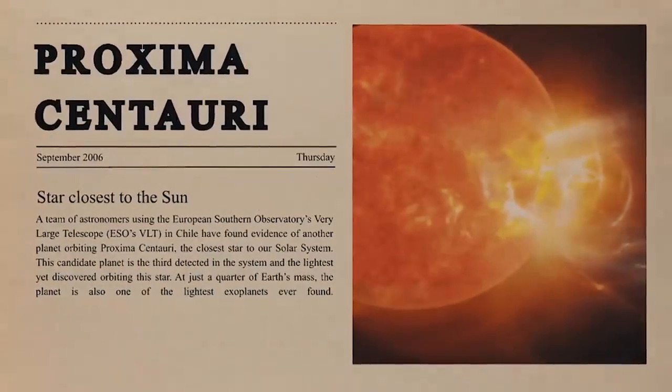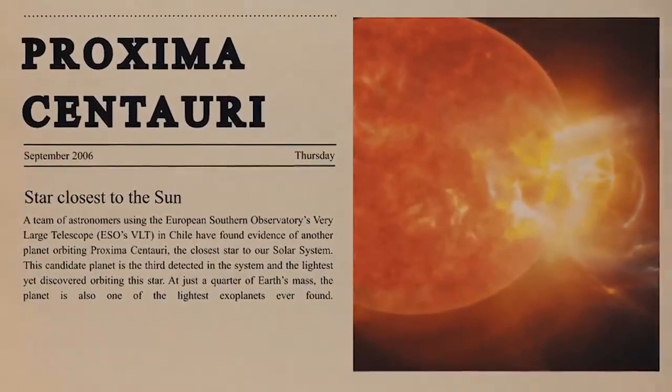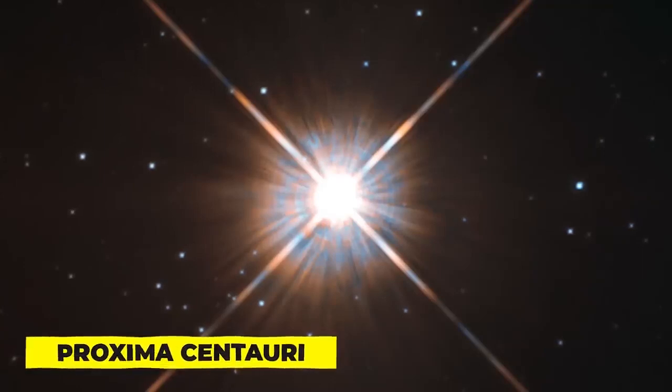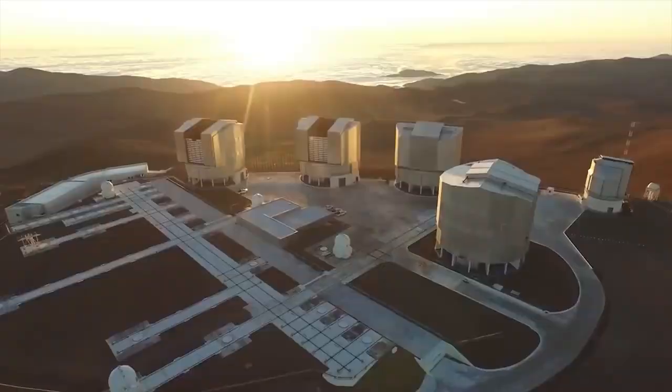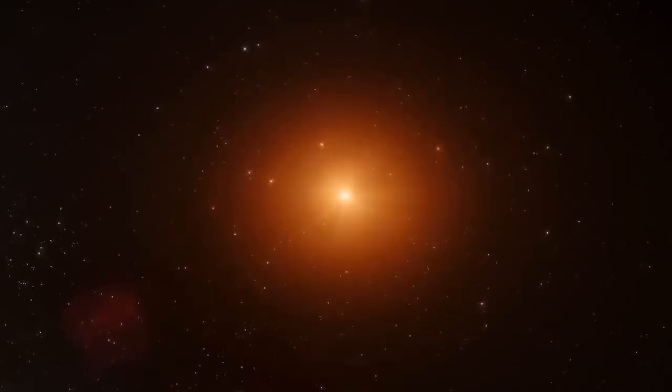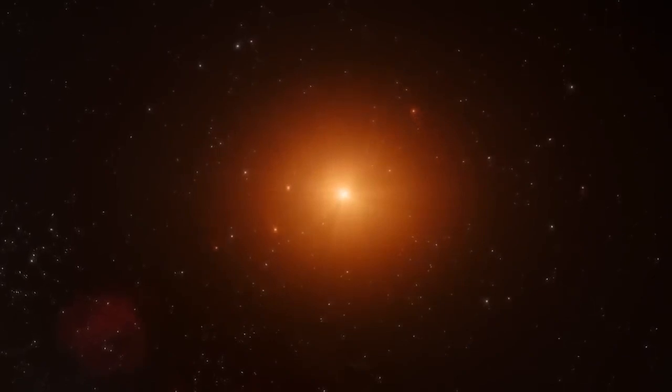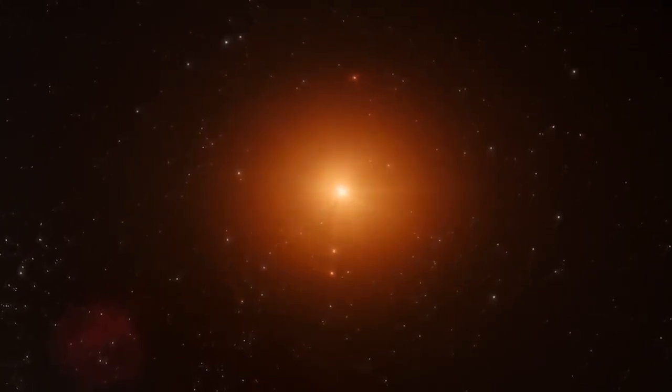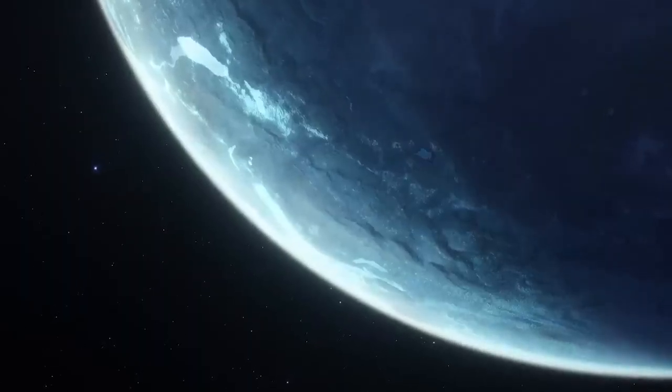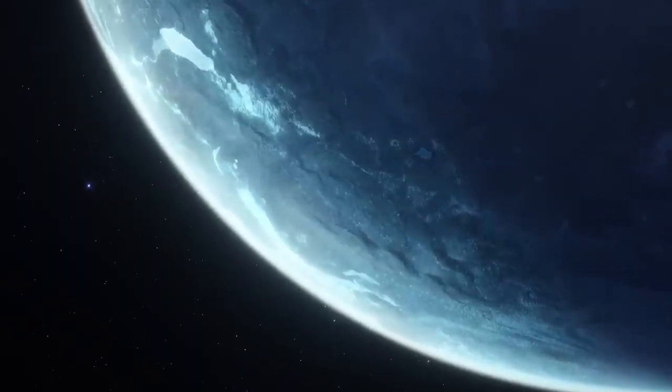The best chance for humans to observe city lights on an exoplanet is on Proxima Centauri b, a planet that orbits Proxima Centauri, a red dwarf star that is 4.25 light-years away from the Sun and is the closest star to Earth. Proxima Centauri is much dimmer than the Sun, therefore a planet would have to be 20 times closer to it than Earth is to the Sun in order to support life based on liquid water.